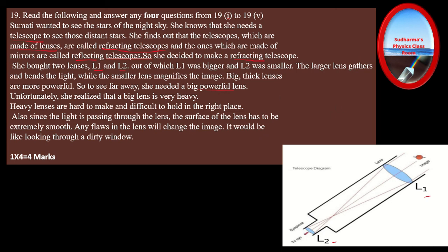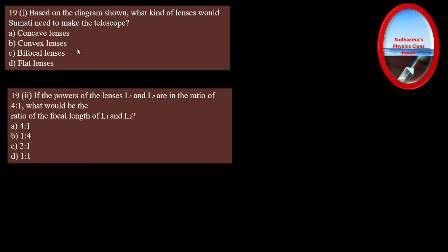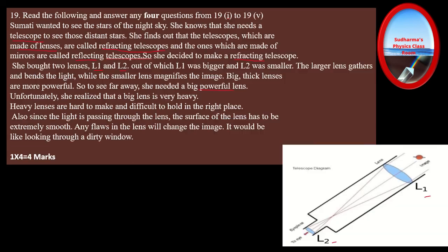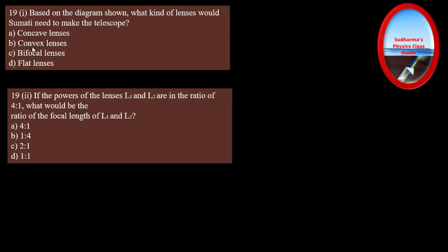Now the questions. We have five questions and must answer four. Question one: based on the diagram shown, what kind of lens would somebody need to make the telescope? It was mentioned in the paragraph that she needs to make a refracting telescope, and refracting telescopes need lenses. In the diagram we can also see two convex lenses. So we go with option B — convex lenses. Easily one mark in your pocket.